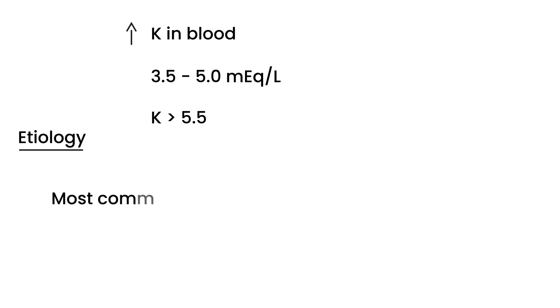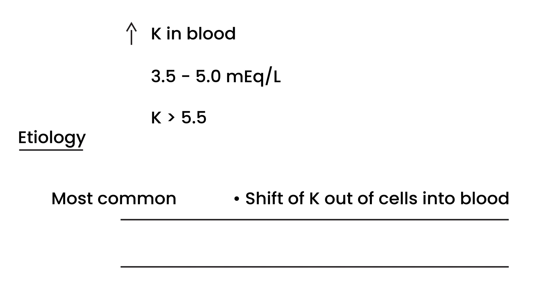In terms of cause, you're looking at three possible scenarios. The first one, which is the most common scenario, is shift of potassium out of the cells into the blood. A perfect example of this is what happens with red blood cells. This is a blood vessel and inside you've got these red blood cells, RBCs. Sometimes hemolysis can occur and when that happens the potassium comes out of the cells into the bloodstream, resulting in an increased potassium value when you measure it in the serum.